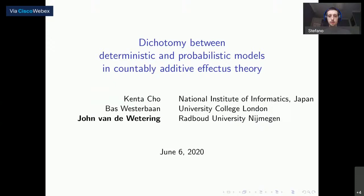Good afternoon, everybody, and welcome back to this QPL session. The first talk in this session is going to be John van der Wettering's, and he's going to talk to us about the Dichotomy between Deterministic and Probabilistic Models in Countably Additive Effectus Theory. John, please. Thank you, Stefano.